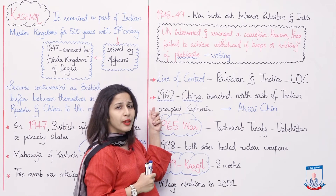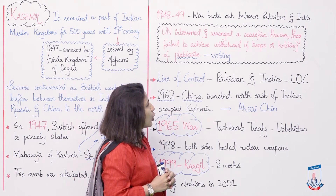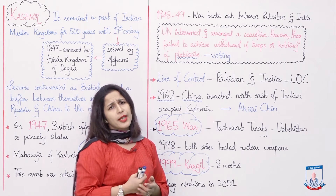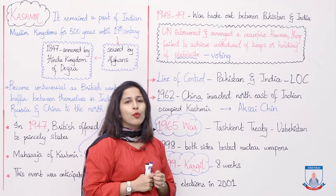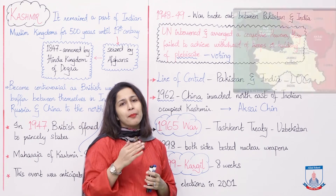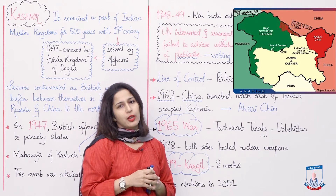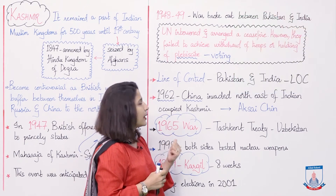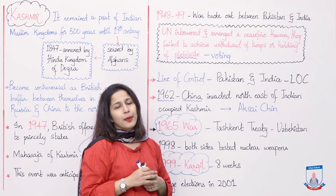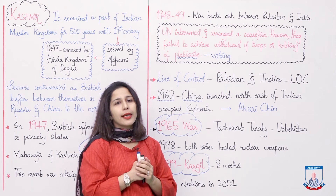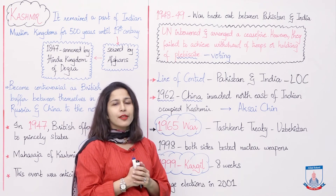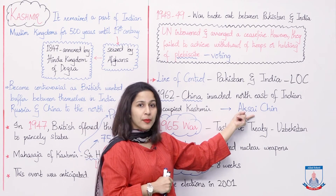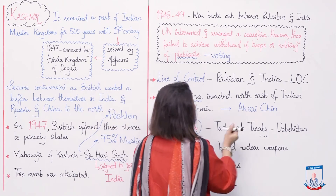In 1962, China invaded the northeast of Indian-occupied Kashmir. If you look at the map, you will see the boundary. China just wanted to make their geographical boundary straight. They were so fierce and strong that the Indian troops had to withdraw. China then gave this area the name Aksai Chin.